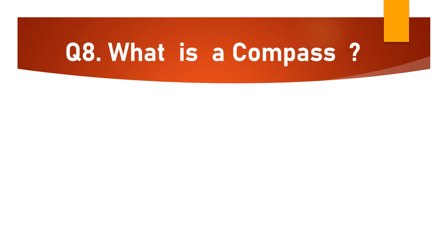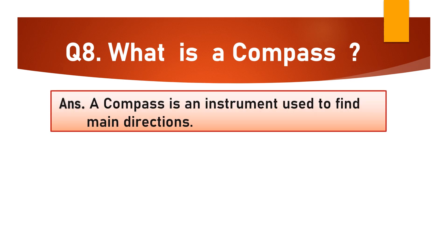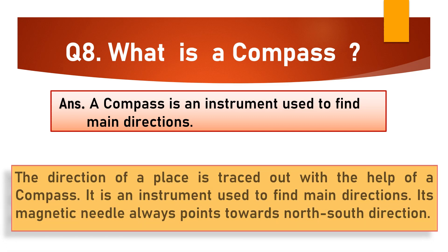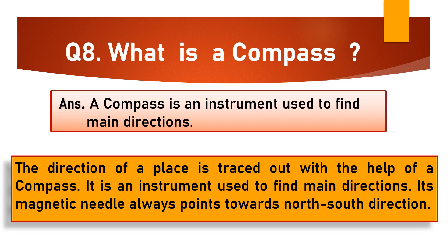Question No. 8: What is a compass? A compass is an instrument used to find main directions. The direction of a place is traced out with the help of a compass, and its magnetic needle always points towards the north-south direction.